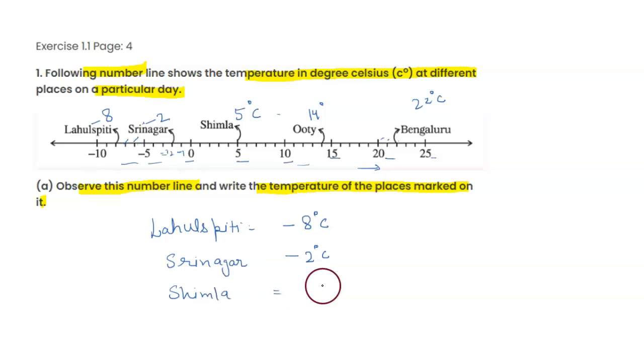Shimla 5 degree Celsius, Ooty 14 degree Celsius, Bangalore 22 degree Celsius. Thank you.